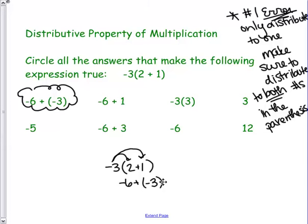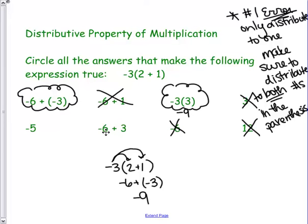Would a negative 6 plus 1 work? No, because that one they did not distribute to both numbers. What about if we solve, we get a negative 9. If we solve this one, we get negative 9. So it works. Do we get 3? No. Do we get 12? No. Do we get negative 6? No. A negative 6 plus a 3? No. And a negative 5? No.